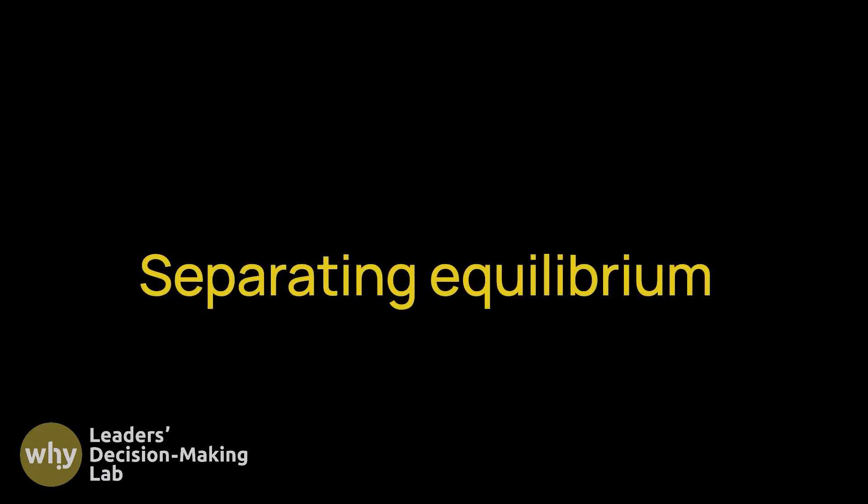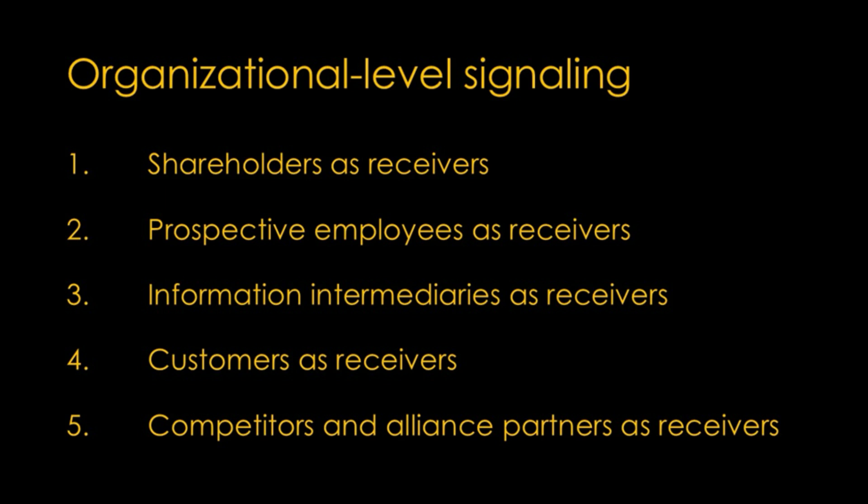The difference in costs between high-quality and low-quality signallers is what prevents lower-quality signalers from easily imitating high-quality signals. As a result, fast decision-making remains a reliable indicator of competence. The differential costs lead to what economists call a separating equilibrium — a situation where high-quality and low-quality signalers end up choosing different strategies, effectively separating themselves into distinct groups.